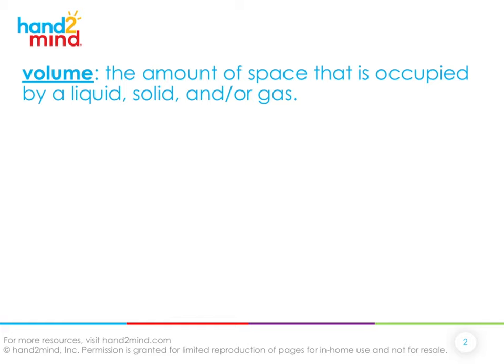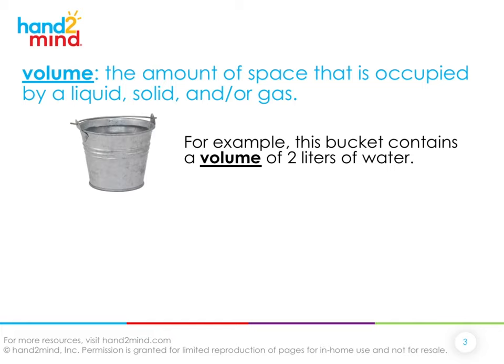We can say that the volume of the box is taken up by both sand and air. Another example of volume is this bucket — it contains a volume of two liters of water, meaning the amount of water in this bucket is two liters. You could pour it into a totally different shaped bucket and it would still have two liters.